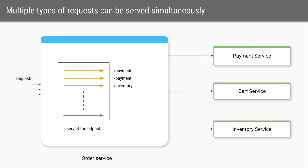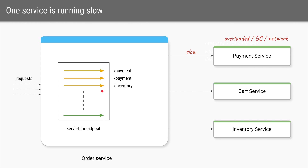Since the servlet thread pool size is 200, there can be multiple simultaneous requests, each of a different kind, which can be served simultaneously. In this case there are two requests of type payment — they are assigned their own threads — and there is another request for inventory, which also runs on its own thread.